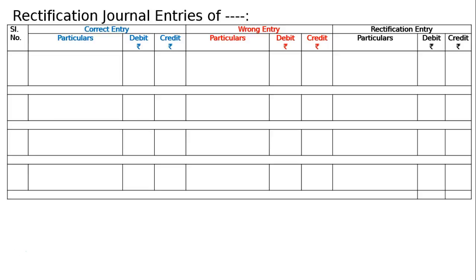When the cheque is dishonored, the entry will be reversed: Rajan debited 10,200 — to bank account 10,000, to discount allowed account 200. This is the correct entry. When we receive the cheque, we pass the entry like this: bank account debited, discount allowed account debited 10,200, and to Rajan 10,200.